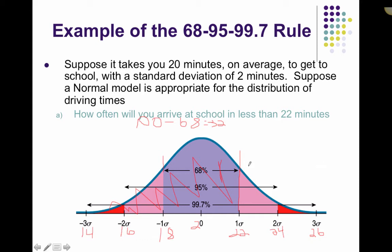And then, from here all the way down, we'll make up the other 16%. So, to be less than 22, I have my 68 plus my 16, which means that we will arrive to school in approximately 84% of the time.